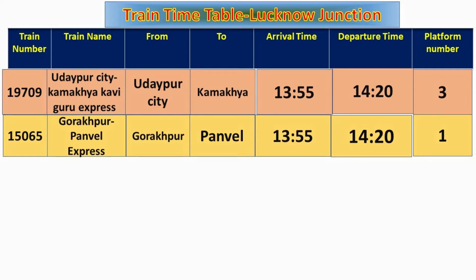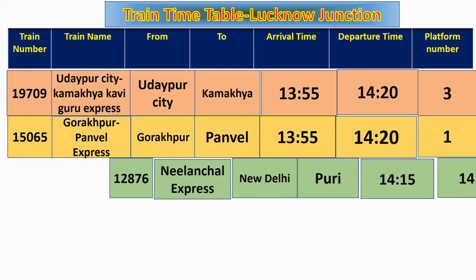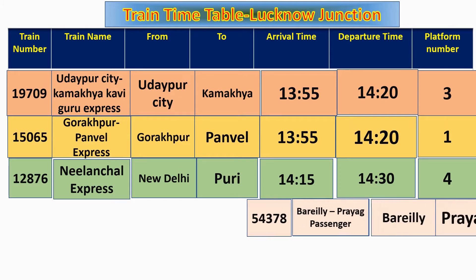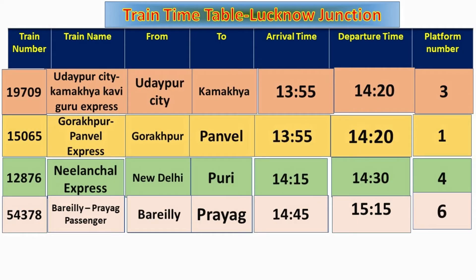At platform number 1, its departure time is 14:20. Train number 12876, Neelanchal Express, from New Delhi to Puri, will arrive at 14:15 at platform number 4. Its departure time is 14:30. Train number 54378, Bareilly Prayag Passenger, from Bareilly to Prayag, will arrive at 14:45 at platform number 6. Its departure time is 15:15.